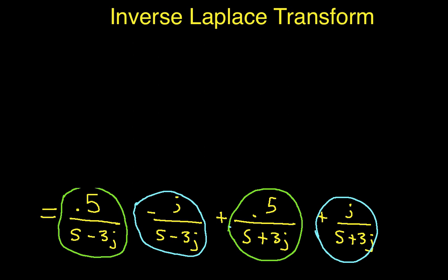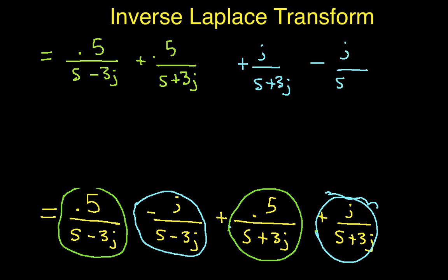And keep going. So the terms that have the real parts, this is going to be 0.5 over S minus 3J, plus 0.5 over S plus 3J. And then we're going to have a plus J over S plus 3J, that's this guy down here, minus J over S minus 3J.